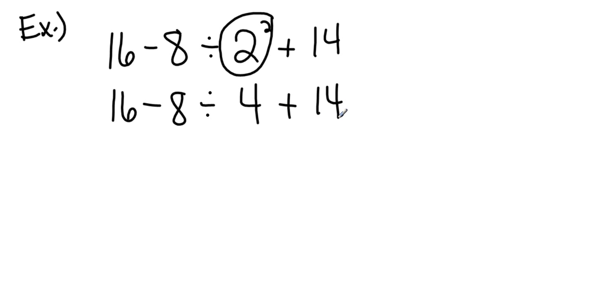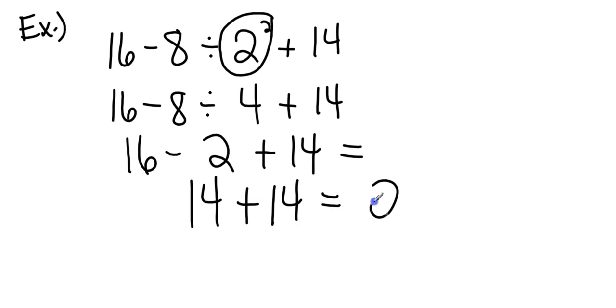In my excuse my dear Aunt Sally, that puts my division first. So I'm going to have 16 minus 8 divided by 4 is going to give me 2. I'm going to add 14. And now since I have subtraction and addition, I do them at the same time from left to right. So I'm going to take 16 minus 2, that's going to give me 14 plus 14. For a final answer, 28.